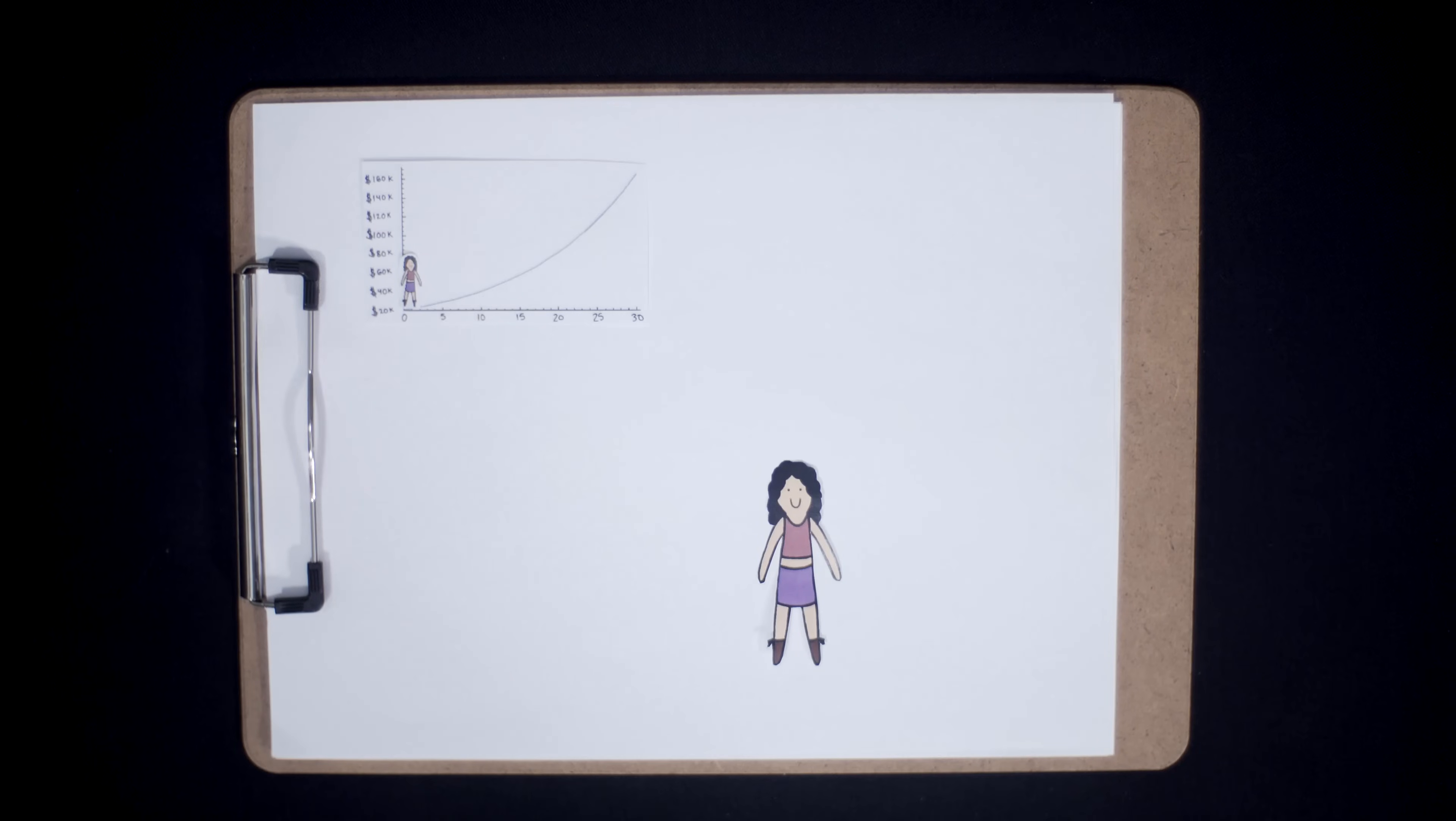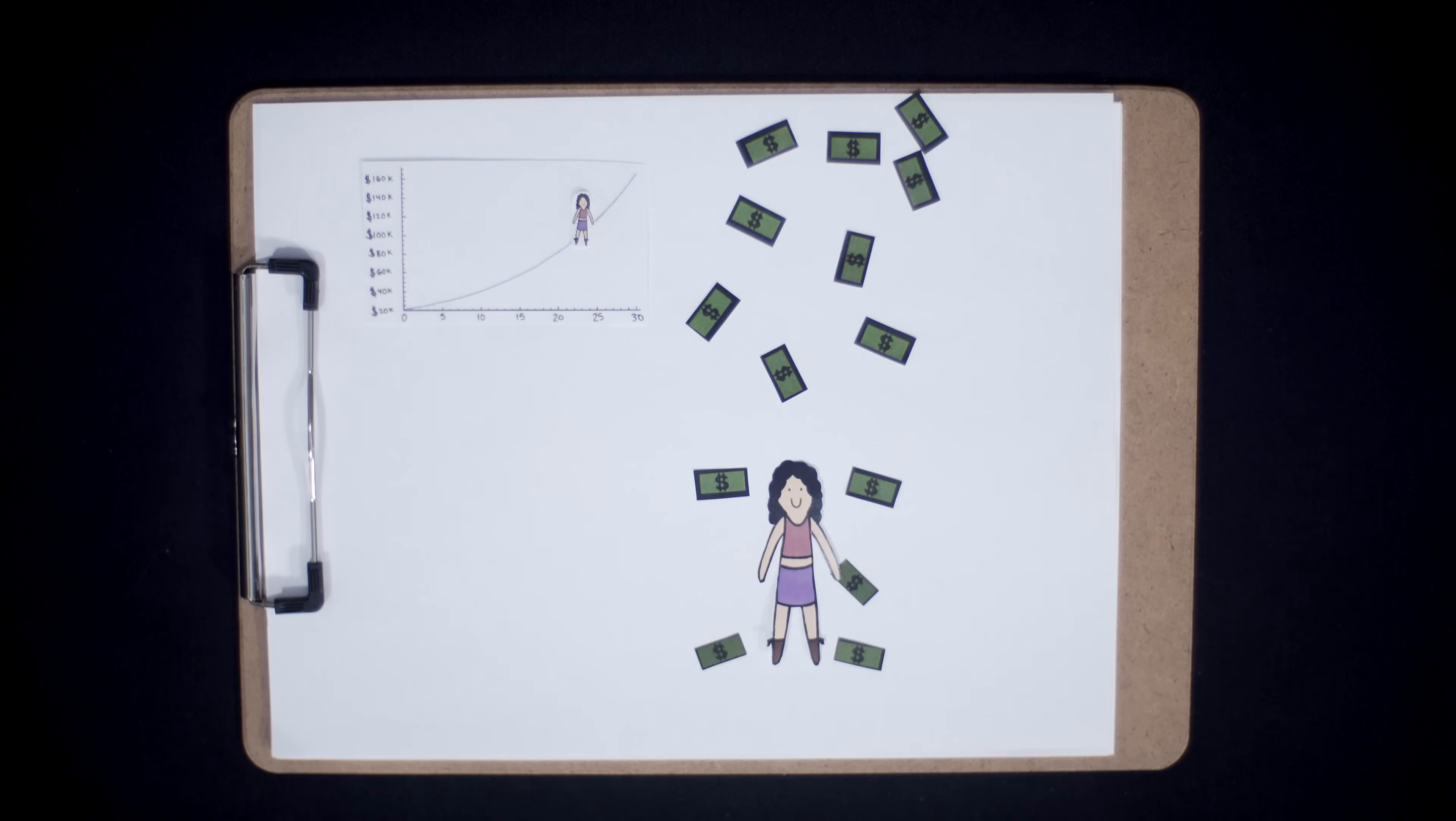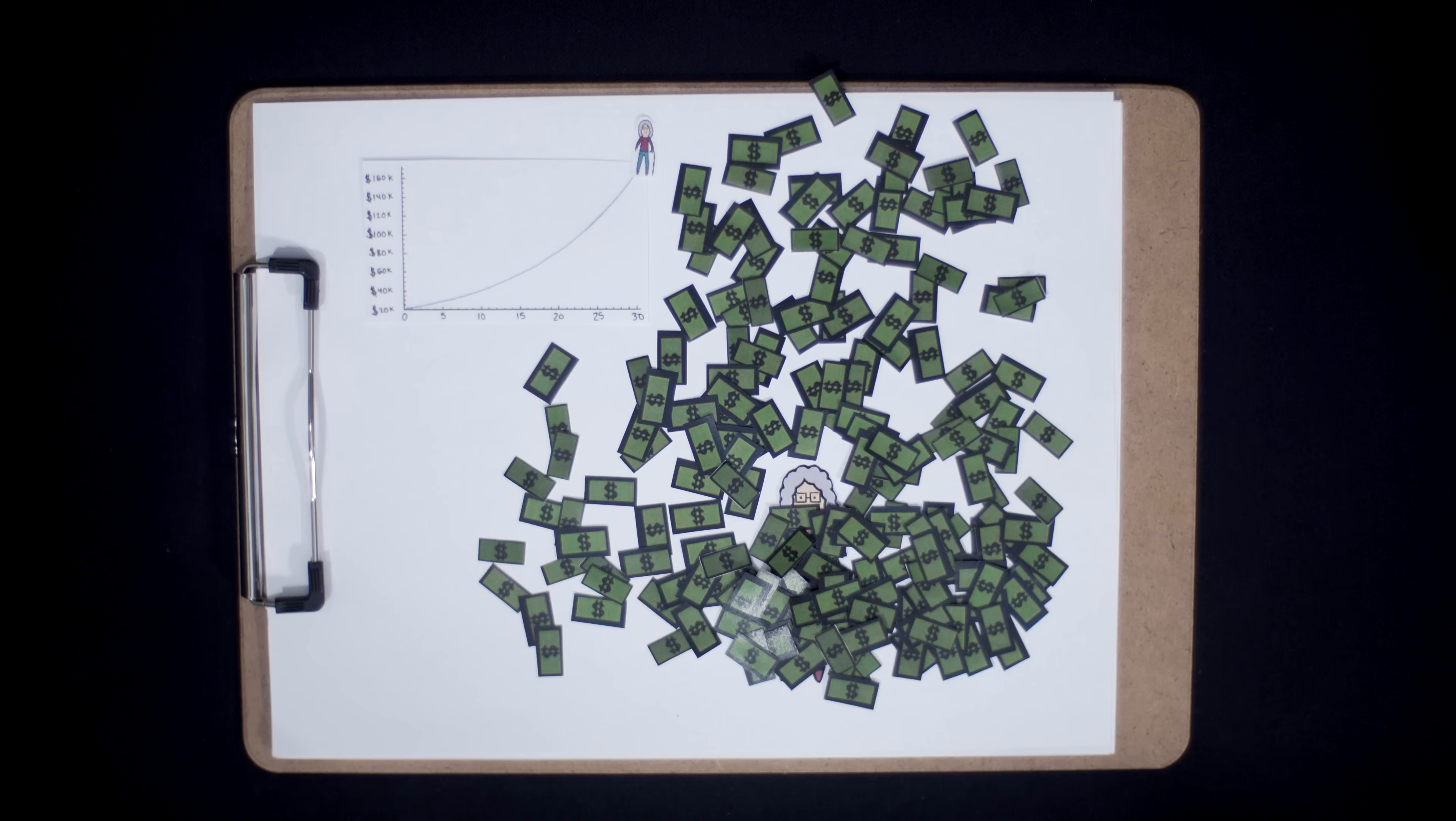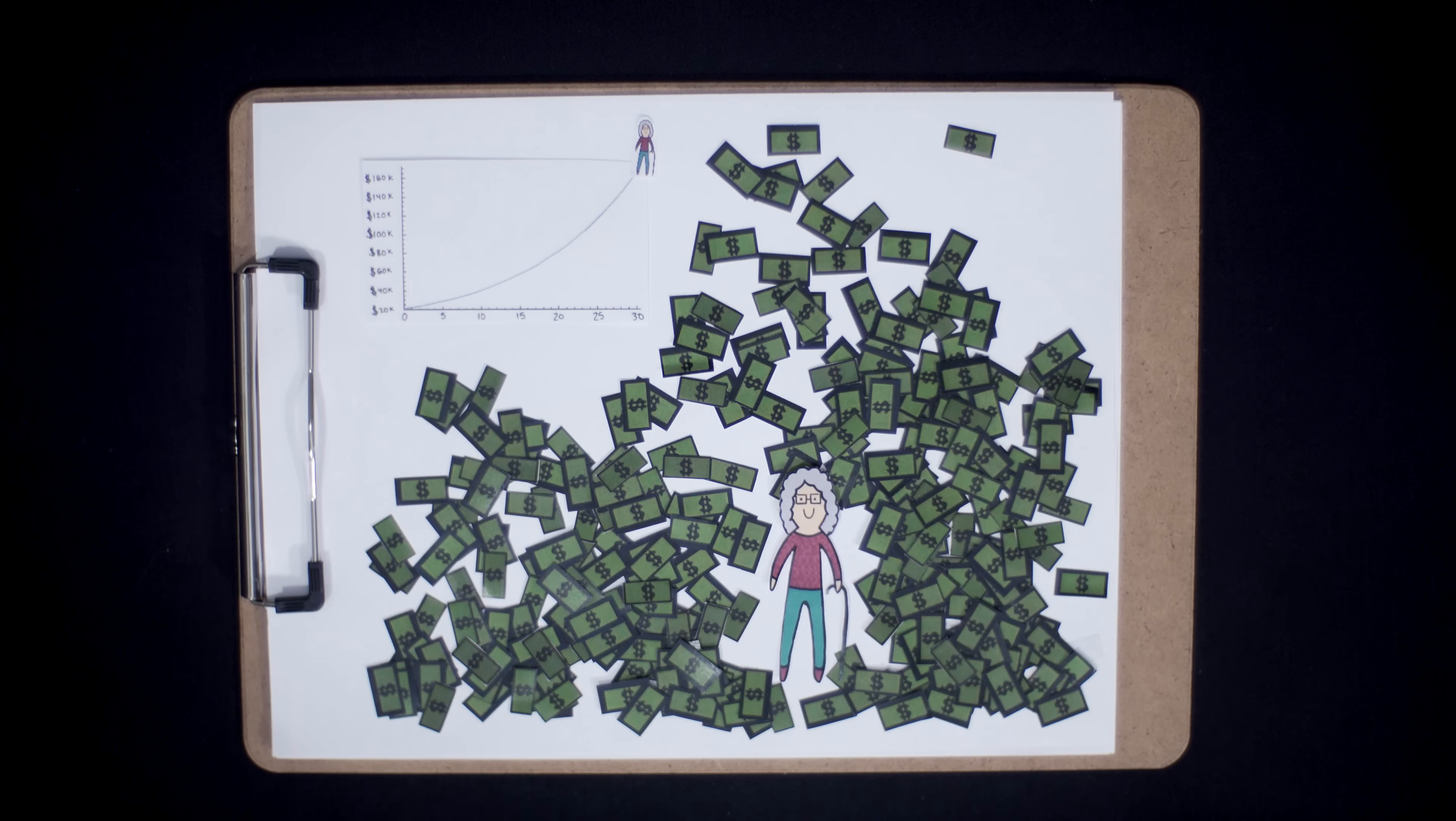When people start to save, it often seems slow and pointless because things don't change all that much. The rate of absolute change gets faster and faster. This is what people mean by exponential growth. And keep in mind, Meticulous Mary stopped saving at 35. Imagine if she had continued contributing to her retirement fund until she retired. That would be an extra 30 years of additional savings and additional compound returns.